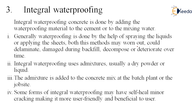The third type is integral waterproofing. Though it is finer and better than the earlier two, integral waterproofing is done by adding the waterproofing material to the cement or concrete as an admixture. Generally, waterproofing done by spraying liquid or applying sheets may wear out, delaminate, get damaged during backfill, decompose, or deteriorate over time. But integral waterproofing uses admixtures — usually a dry powder or liquid — added to the concrete mix at the batch plant or at the job site. Some forms of integral waterproofing may have self-filling of minor cracking, making it more user-friendly and beneficial.